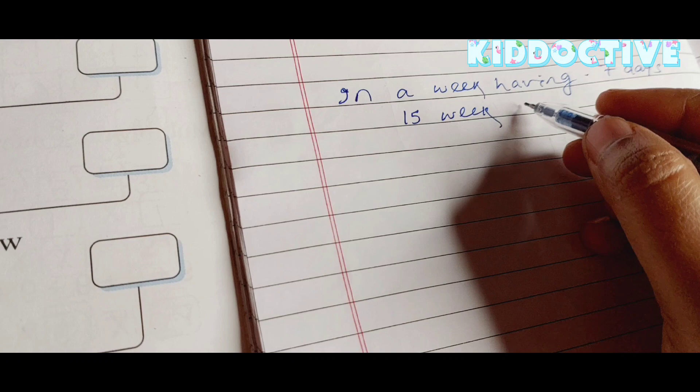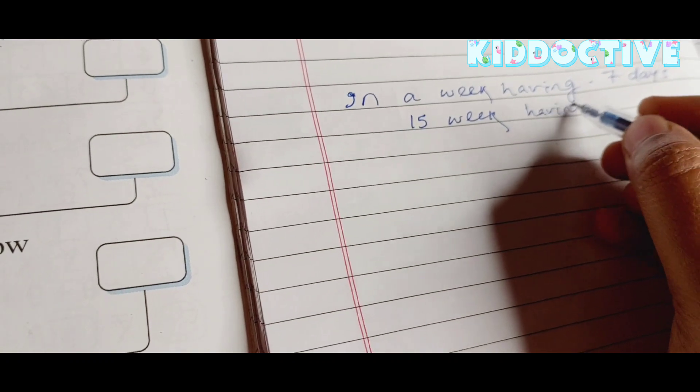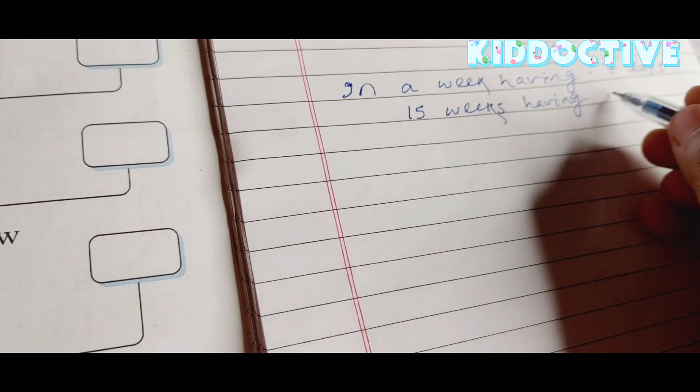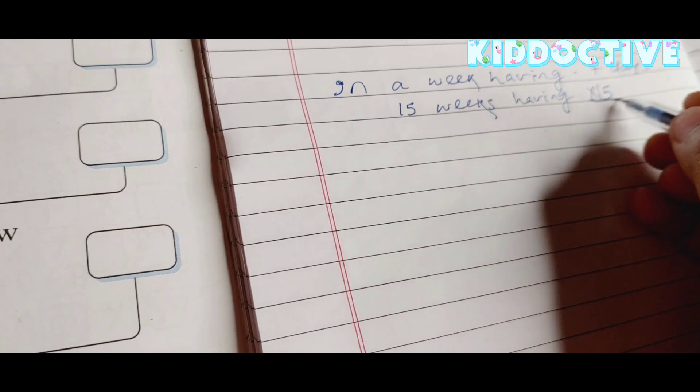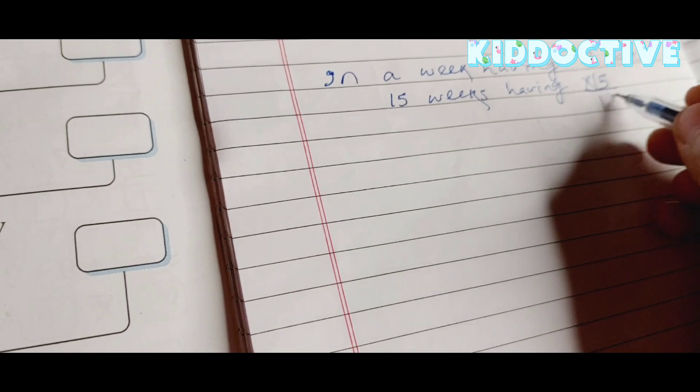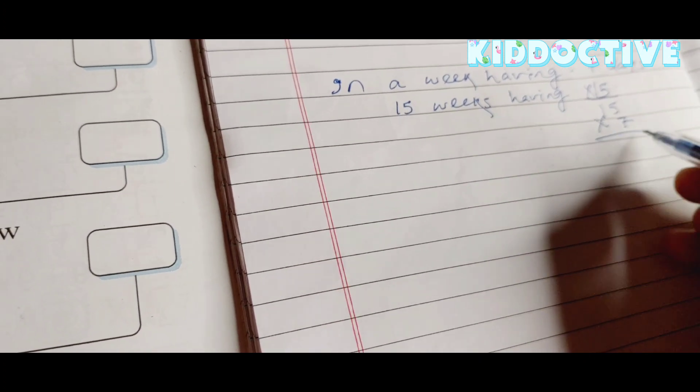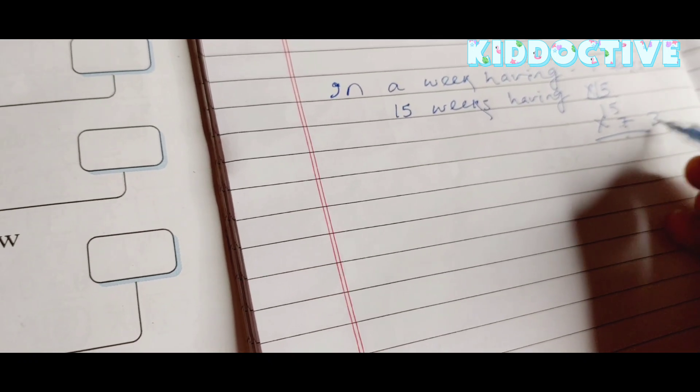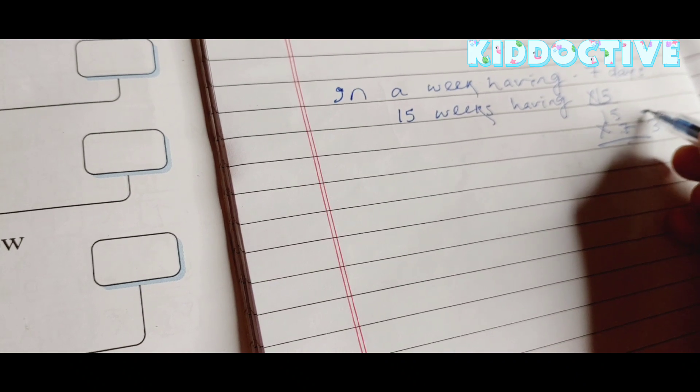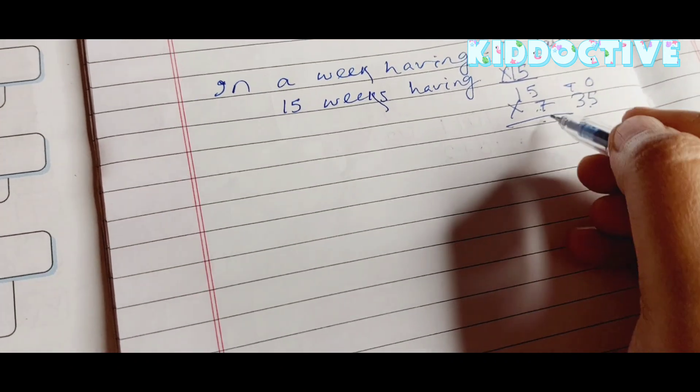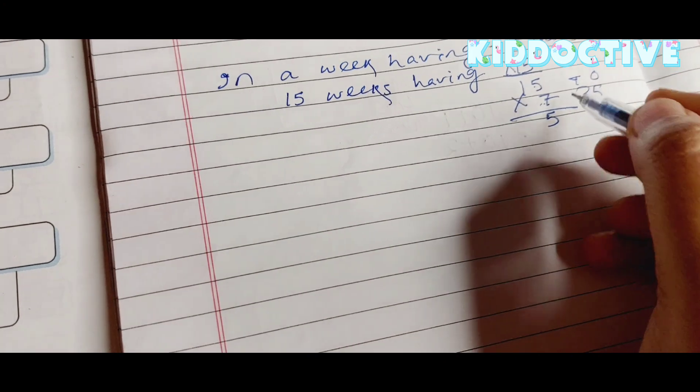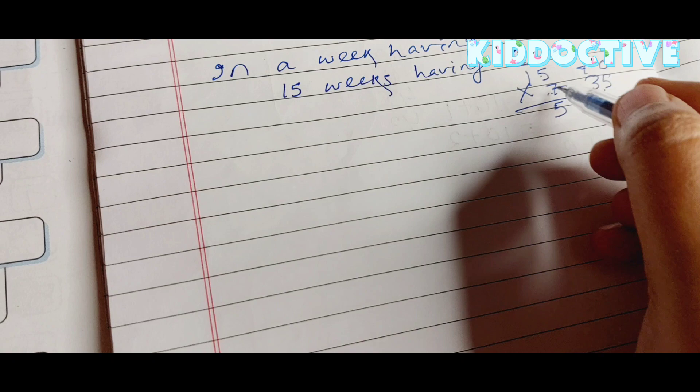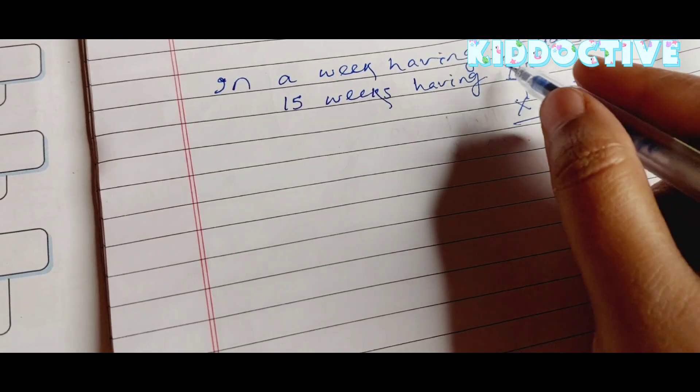We are going to find out 15 weeks having how many days. 15 weeks having 7 multiplied by 15, or you can say 15 multiplied by 7. Seven fives are 35, so we are going to write the ones place 5 here and the tens place 3 we are going to carry here. Then again 7 ones are 7 plus 3 is 10. So 15 weeks have 105 days.